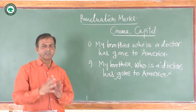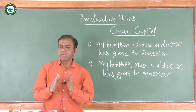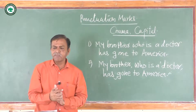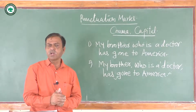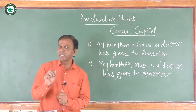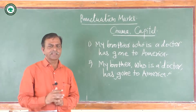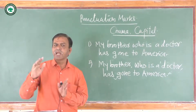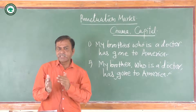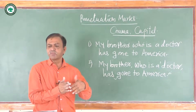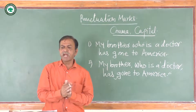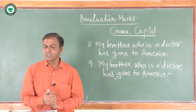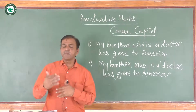The next use of comma is that it is used to separate the day of the month from the year. But if only the month and year are mentioned, the comma is not used. For example: 'Dr. Megrashtra was born on November 15, 1986.' The month is given first, then the date, then a comma, then the year. But if the date comes first, the comma should not be used: 'Dr. Megrashtra was born on the 15th of November 1986.'